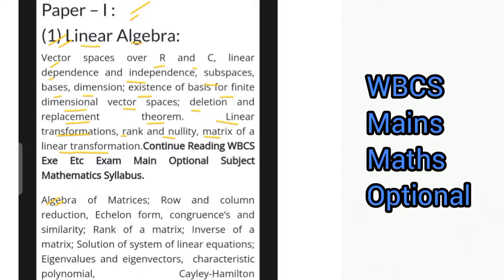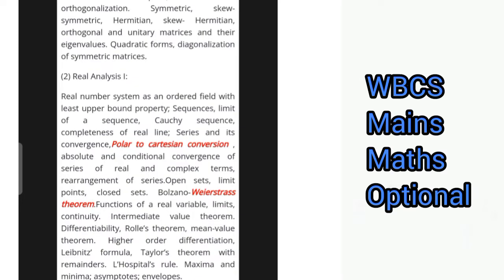In the next portion you have algebra of matrices, row and column reduction, echelon form, congruences and similarity, rank of a matrix, inverse of a matrix, solution of system of linear equations, eigenvalues, eigenvectors, and characteristic polynomial. Then Euclidean space, Gram-Schmidt orthogonalization, symmetric, skew-symmetric, Hermitian, skew-Hermitian, orthogonal and unitary matrices and their eigenvalues, quadratic forms, and diagonalization of symmetric matrices.